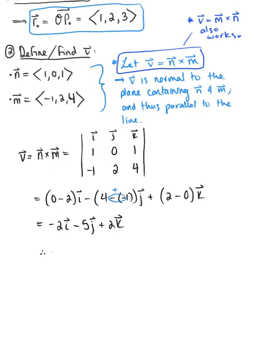So therefore, our vector v that is parallel to the line but normal to these two vectors is defined by the components (-2, -5, 2).